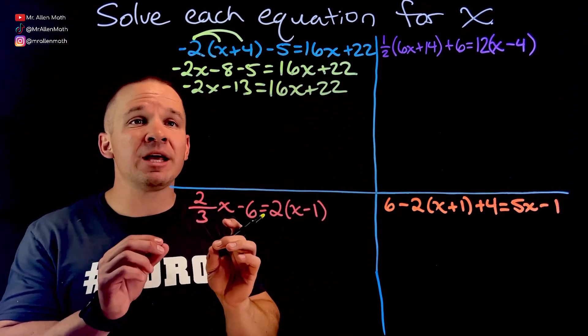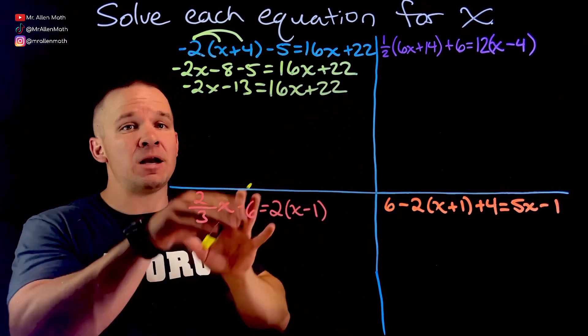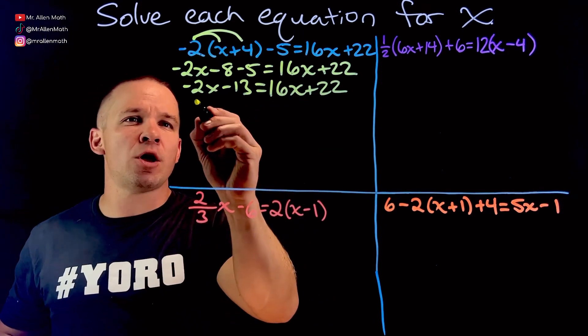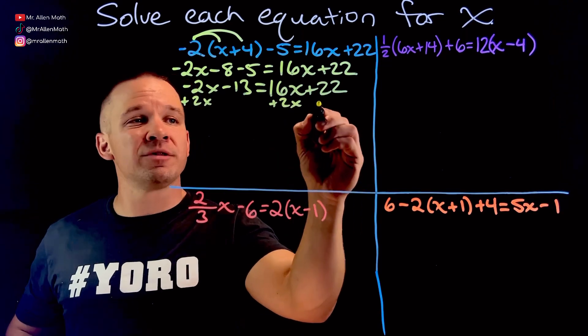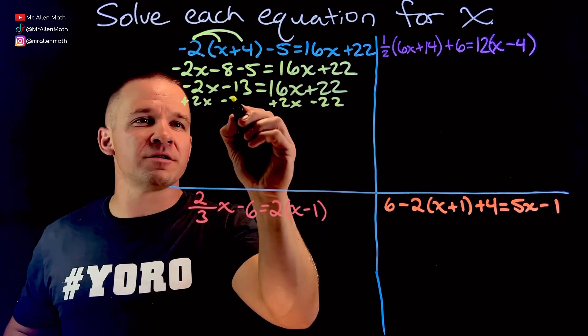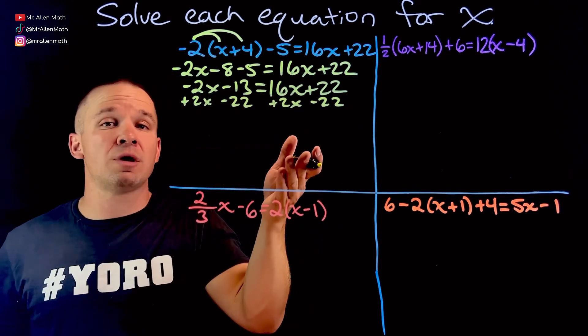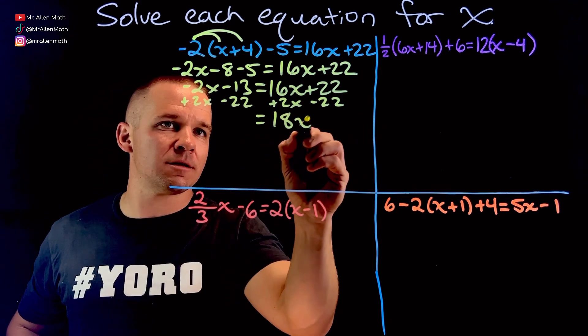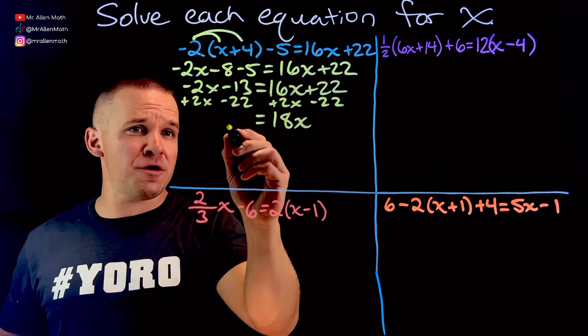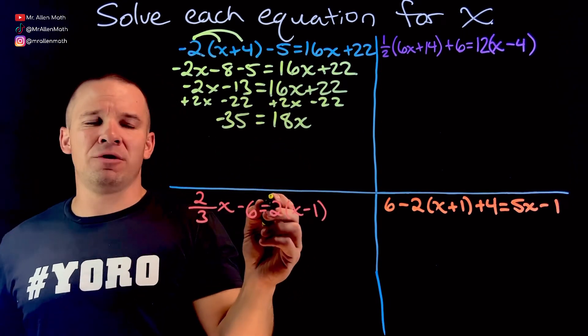Now I'm going to get my x's on one side, my numbers on the other. Because this 16x is positive, I'll go ahead and add 2x to both sides, and I'll bring the 22 over to the other side, or rather subtract 22 on both sides. So now we have ourselves 18x, and I have negative 35.